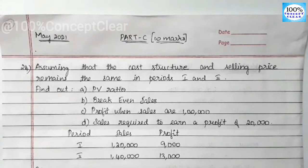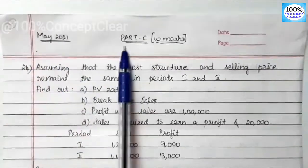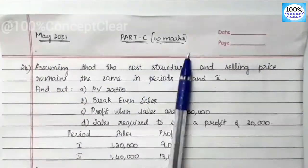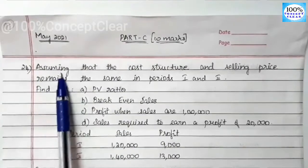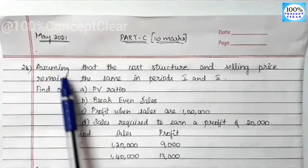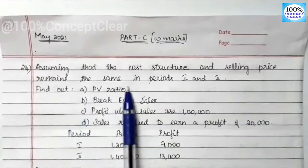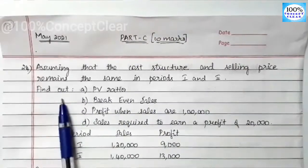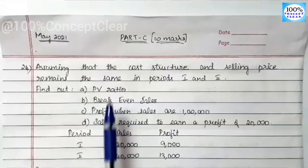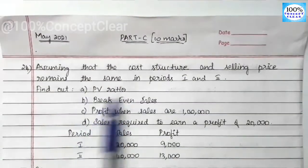We are going to look at the Accounting for Managers subject, May 2021 paper. We are going to look at Part C, 10 marks — specifically the 24th sum. So let's look at the question, which has 4 sub-questions: A, B, C, and D.